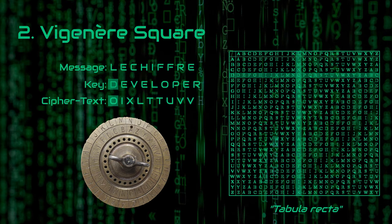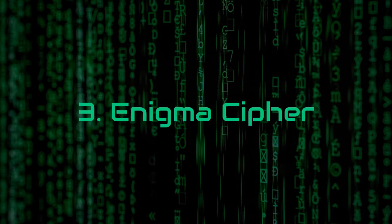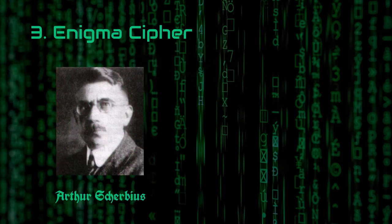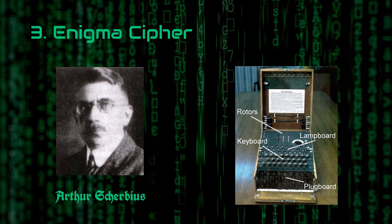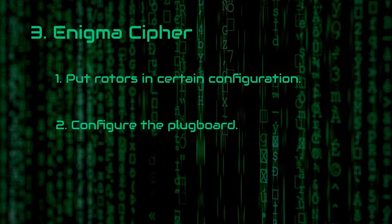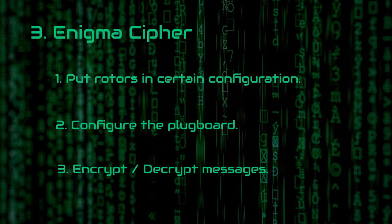Now we can look at another cipher, which is the famous Enigma cipher. It was developed by a German engineer named Arthur Scherbius. It involves a keyboard, lightboard, rotary disks, and a plugboard. Although it is a pretty complicated electromechanical system, it works in the following way. First, you put your numbered or lettered rotors in a certain order according to the specifications you had. Then you configure your plugboard according to those specifications as well. After that, you can encrypt or decrypt messages by typing on the keyboard. The result for each letter will show up on the lightboard.